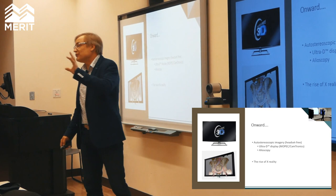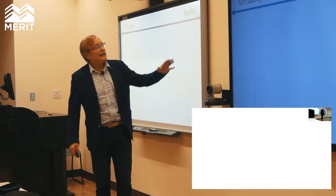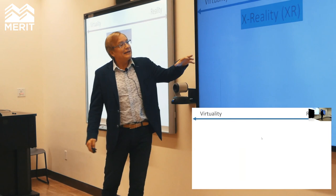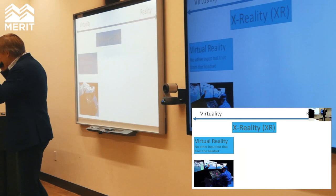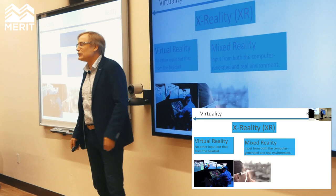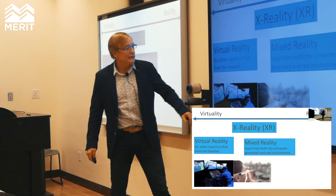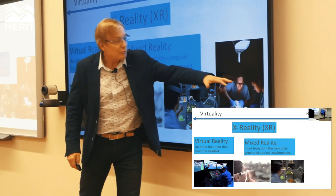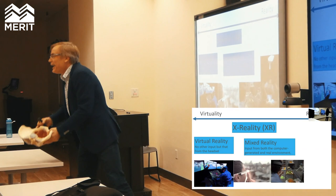And then we've got X-reality, the extended reality continuum. Virtual reality is on one end — you get nothing except what's coming in through your headset. In the middle we have mixed reality — the dearly departed Google Glass — and things like HoloLens. On the far side you have real reality. It's the simple one for people to see.